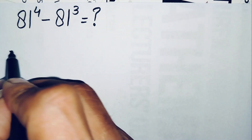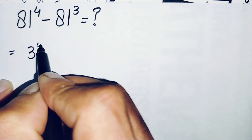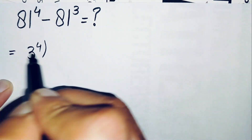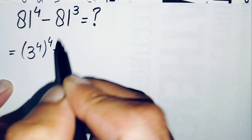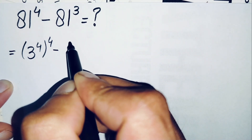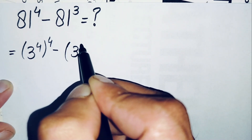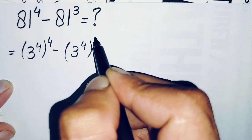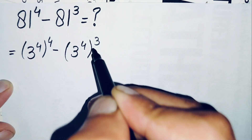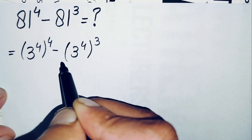We can write 81 as 3 raised to power 4, so the first term becomes 3 raised to power 4, all raised to power 4, minus 3 raised to power 4, all raised to power 3.